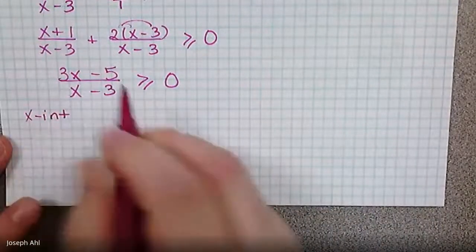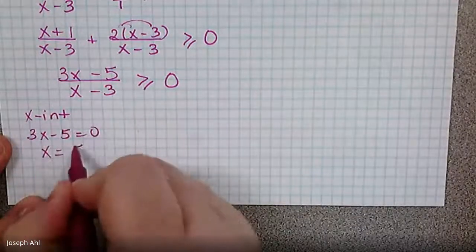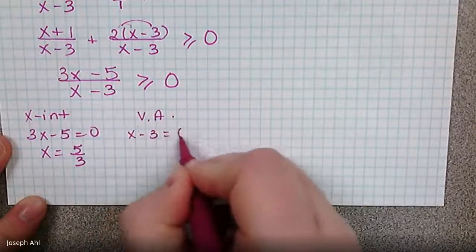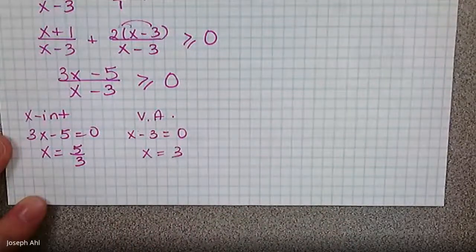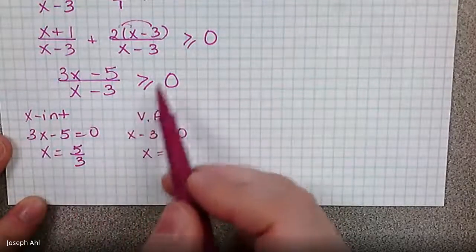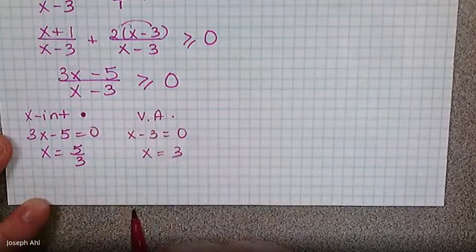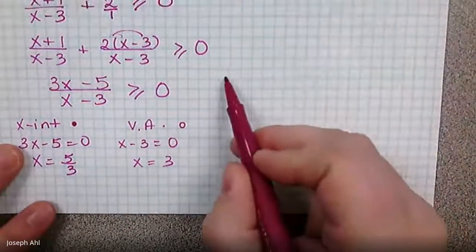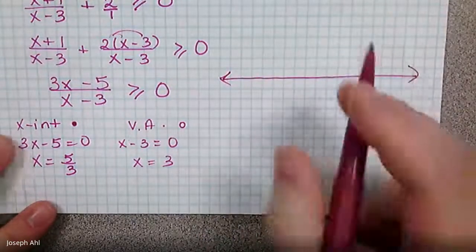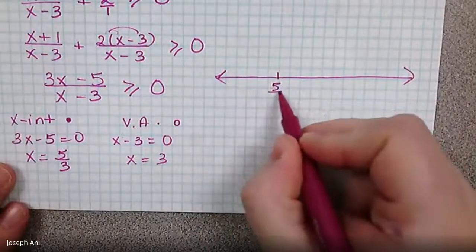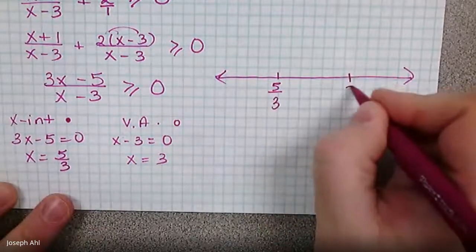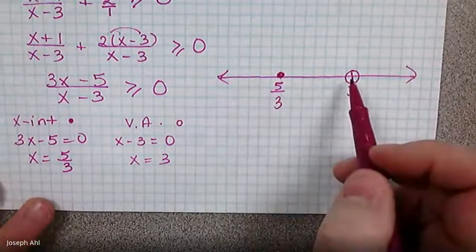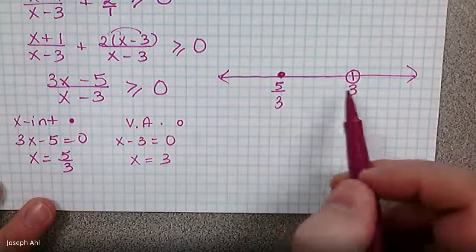With the combined fraction established, the x-intercept comes from the numerator equaling zero: three x minus five equals zero gives x equals five-thirds. The vertical asymptote comes from the denominator: x minus three equals zero gives x equals three. Because this is a greater than or equal to zero example, the x-intercept can be a closed circle, but the vertical asymptote is always open. On the number line, we have five-thirds with a closed circle and three with an open circle.